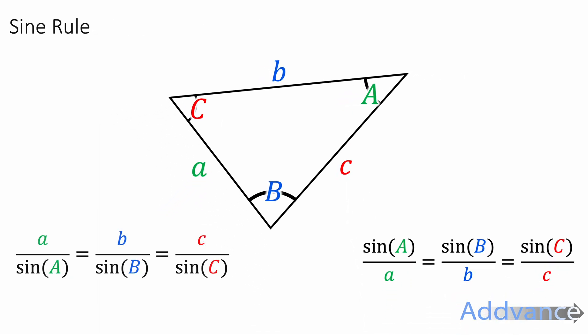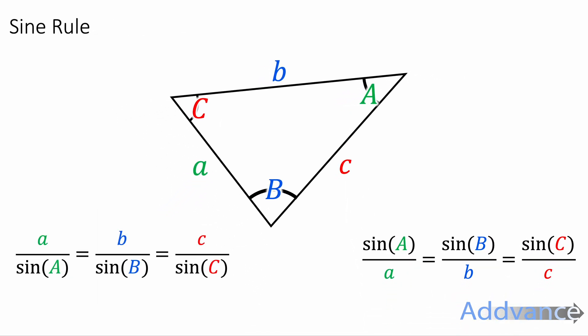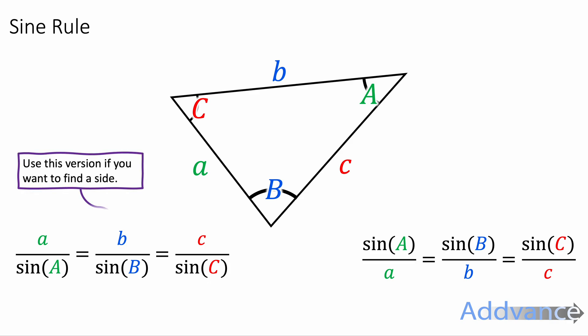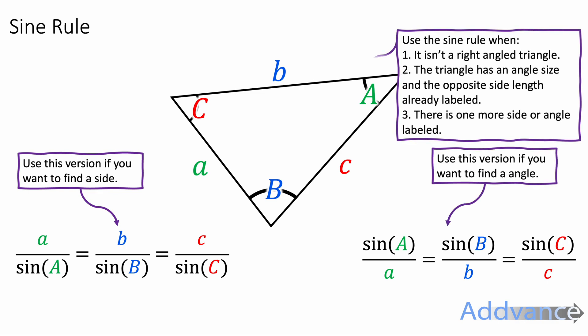And the sine rule says this: a over sine A equals b over sine B equals c over sine C. Or if you're trying to find an angle, it's sine A over a equals sine B over b equals sine C over c. We use the left-hand side version for finding lengths and we use the right-hand side version for finding angles.